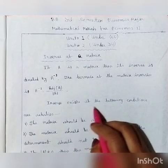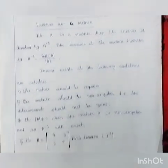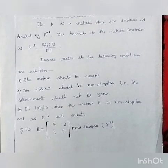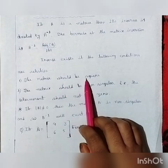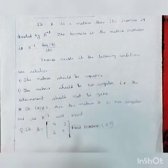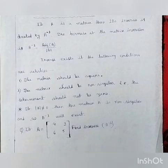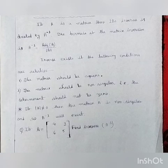The inverse of a matrix exists if the following conditions are satisfied. First condition: the matrix should be square. That means 2×2 dimension, 3×3 dimension, or 4×4 dimension.